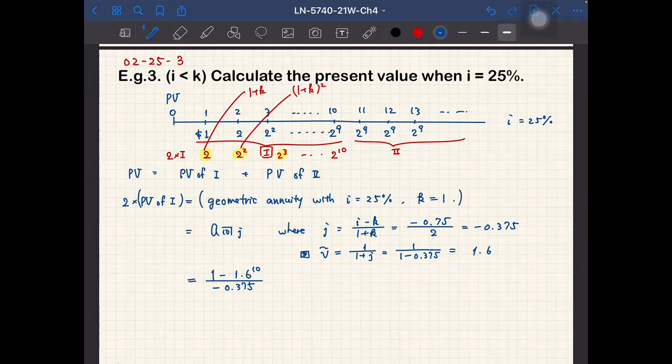So actually this quantity becomes positive because this is negative over negative, and this is actually 290.54.